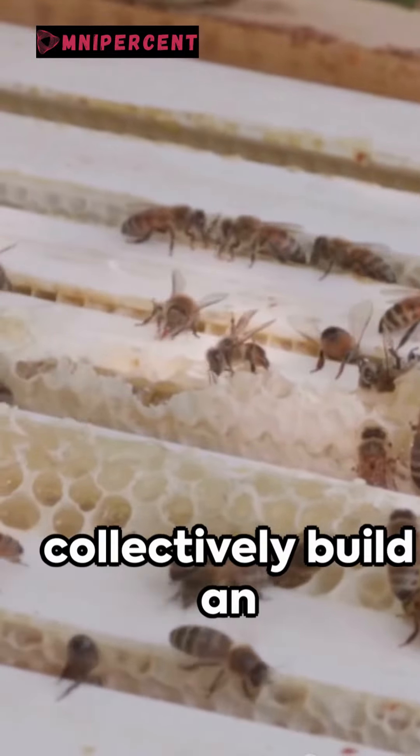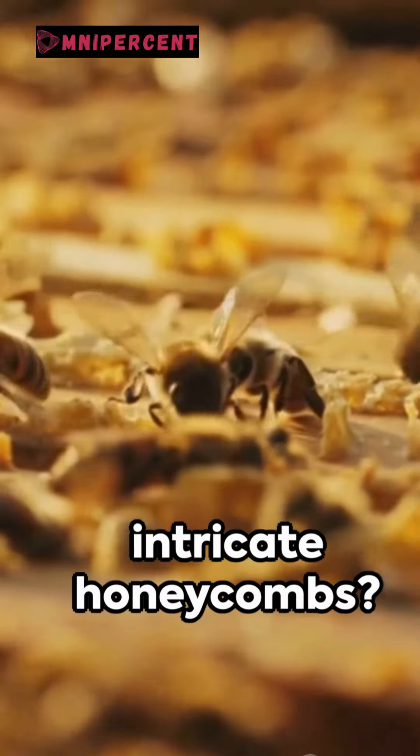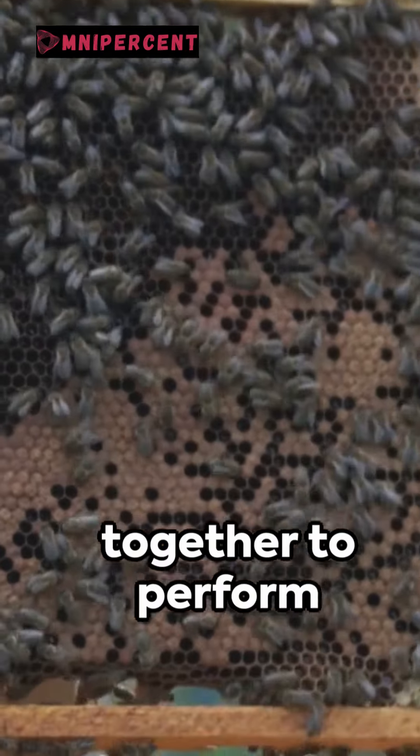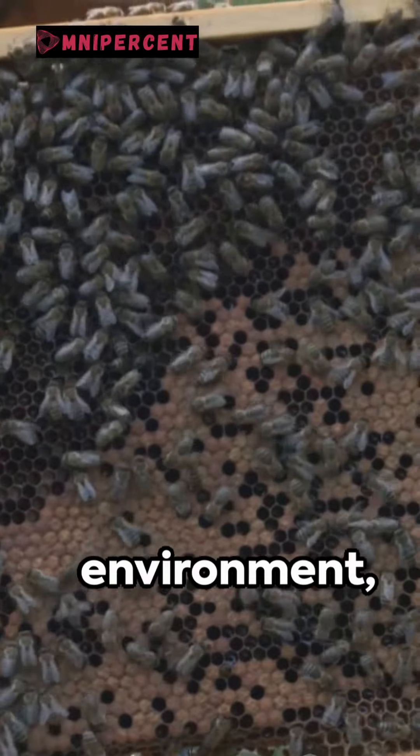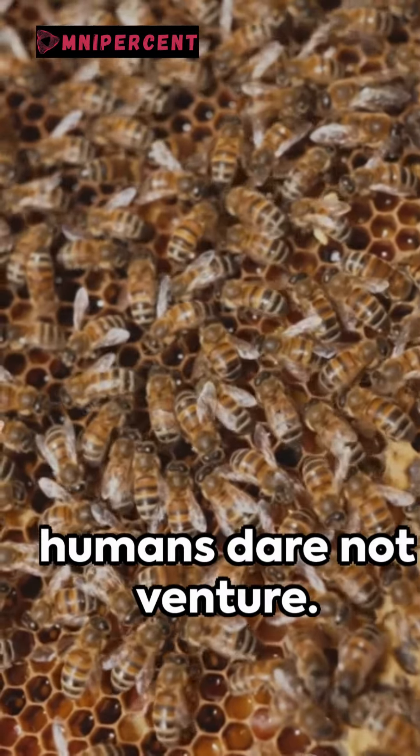Remember how ants collectively build an anthill or bees collaborate to create intricate honeycombs? Swarm robots operate on the same principles. They can work together to perform search and rescue missions, monitor the environment, construct structures, and even explore hazardous zones where humans dare not venture.